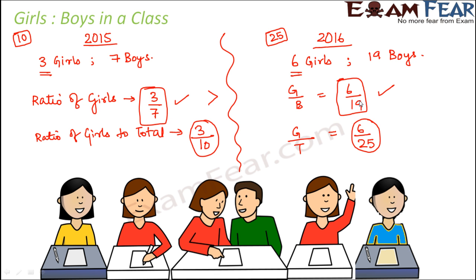So I hope you get the concept of ratio. Ratio is always comparison using division. Whenever you divide a particular quantity with respect to some other quantity, that is where ratio comes into picture. This was one of the best examples where you saw that the mere difference — 3 girls before, 6 girls now — doesn't tell you whether the ratio of girls improved or not. Only when you consider comparison using division do you get to know whether the ratio has actually improved or deteriorated. Ratio plays a very important role in comparing quantities.